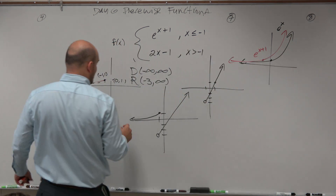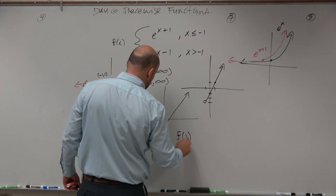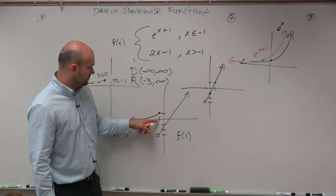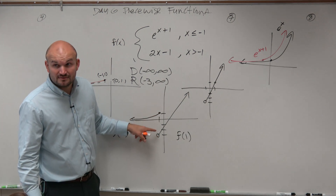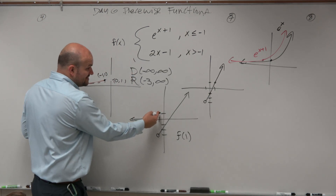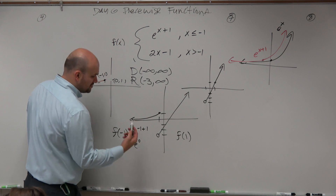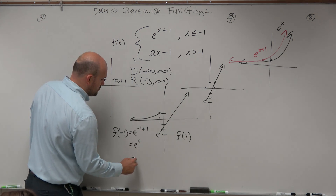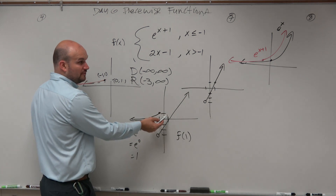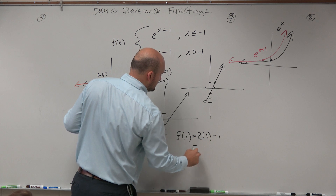Let's evaluate a couple values: f of negative 1 and f of 1. At f of negative 1, which function is defined there? It's only one of them — because if two functions were defined, would it still be a function? No. Only the exponential one: e to the negative 1 plus 1, which equals e to the 0, and anything raised to the 0 power equals 1. For f of 1, which function should we evaluate? That one — so it equals 2 times 1 minus 1, which is 1.